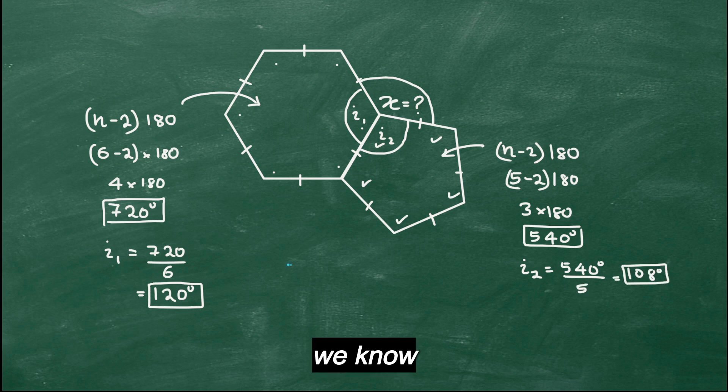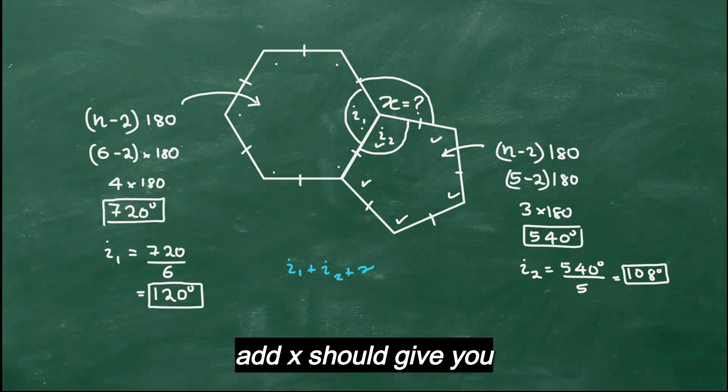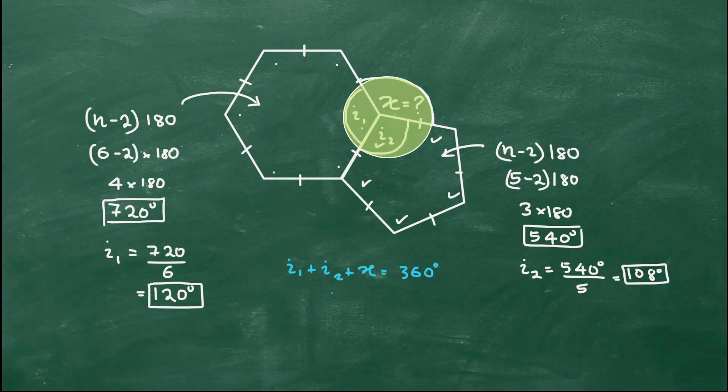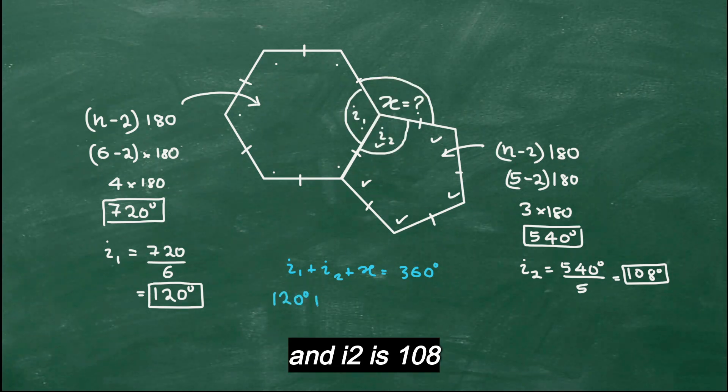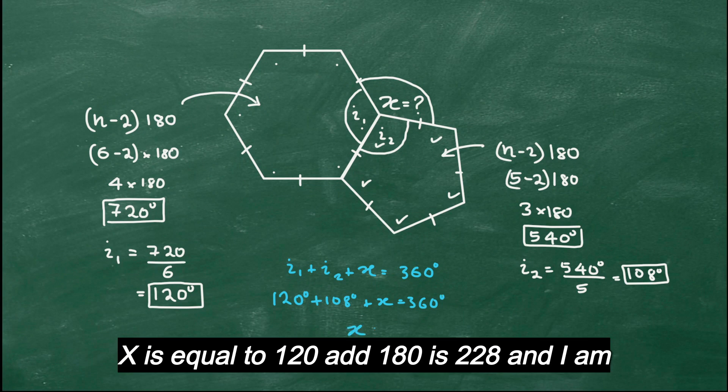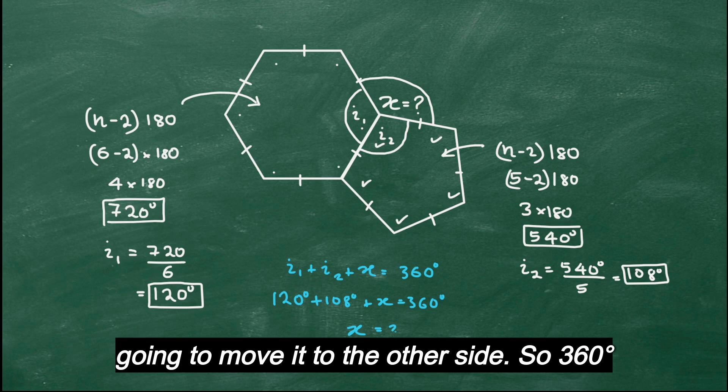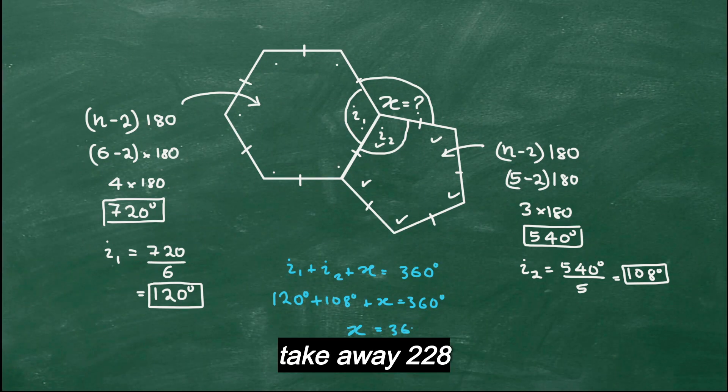To find i2, what you can do is divide 540 degrees by 5, which gives you 108 degrees. Now we know i1 add i2 add x should give you 360 degrees, because the angles about the point add up to 360. So we already know i1 is 120 and i2 is 108, and x I don't know gives you 360 degrees. X is equal to 120 and 180 is 228, and I'm going to move it to the other side, so 360 degrees take away 228.